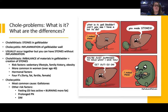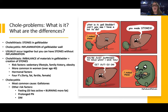We have two issues to discuss with gallbladder problems. One is cholelithiasis — those are stones in the gallbladder — and the other is cholecystitis, which is inflammation of the gallbladder itself. Usually these occur together; if a patient has stones, it's going to create inflammation. But it is possible to have stones without inflammation. Cholelithiasis usually happens because there's some sort of imbalance of materials in the gallbladder where you have too much of one material, and then stones form.